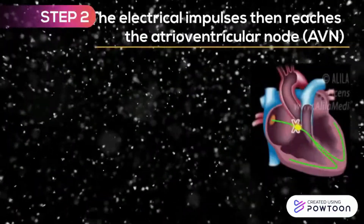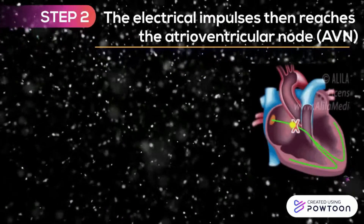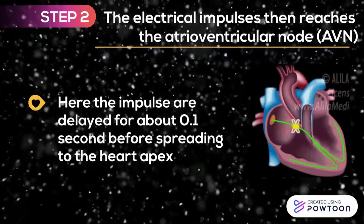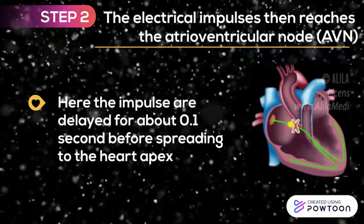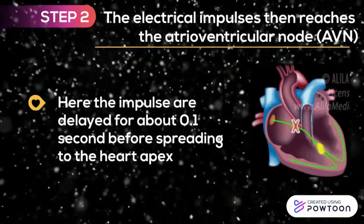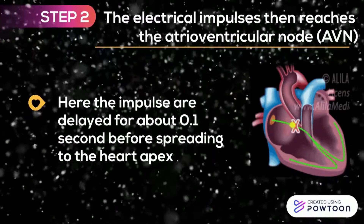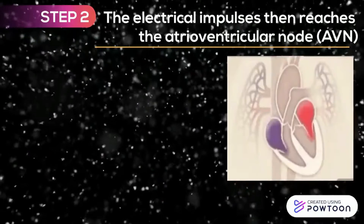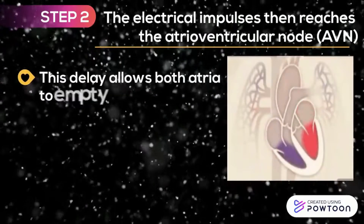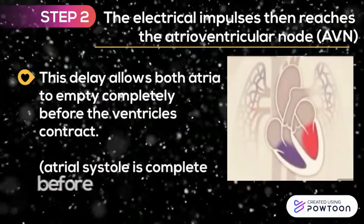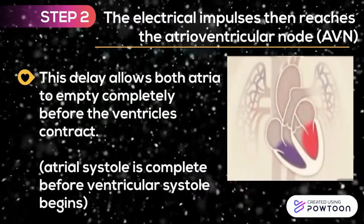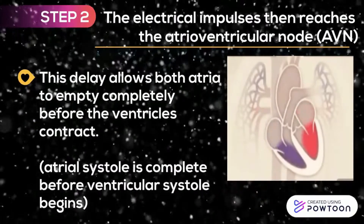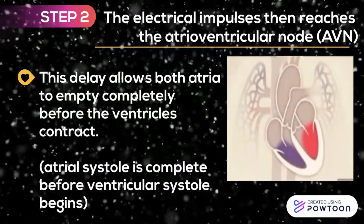Step 2: The electrical impulses then reach the atrioventricular node (AVN). Here, the impulses are delayed for about 0.1 second before spreading to the heart. This delay allows both atria to empty completely before the ventricles contract. Atrial systole is complete before ventricular systole begins.